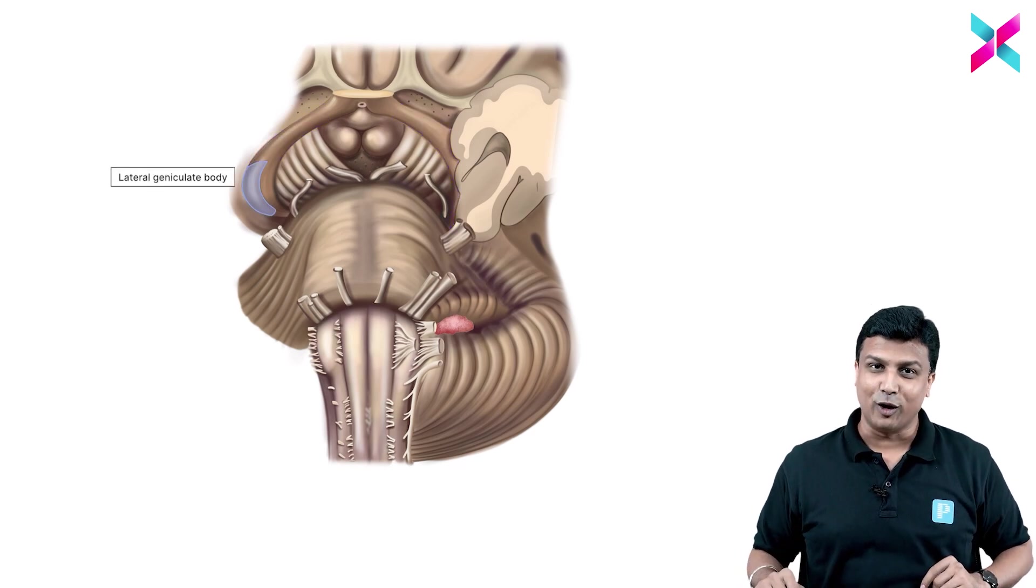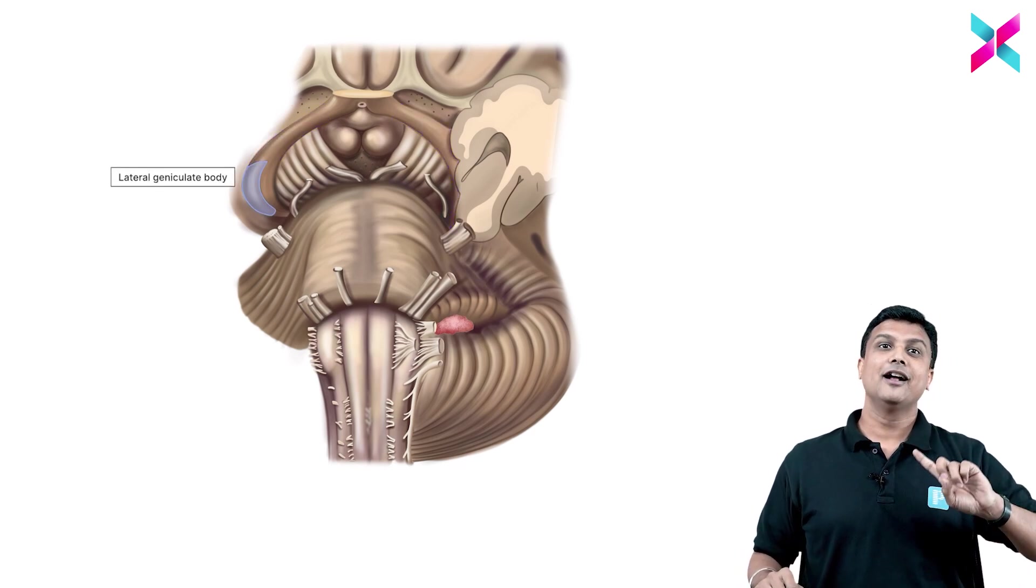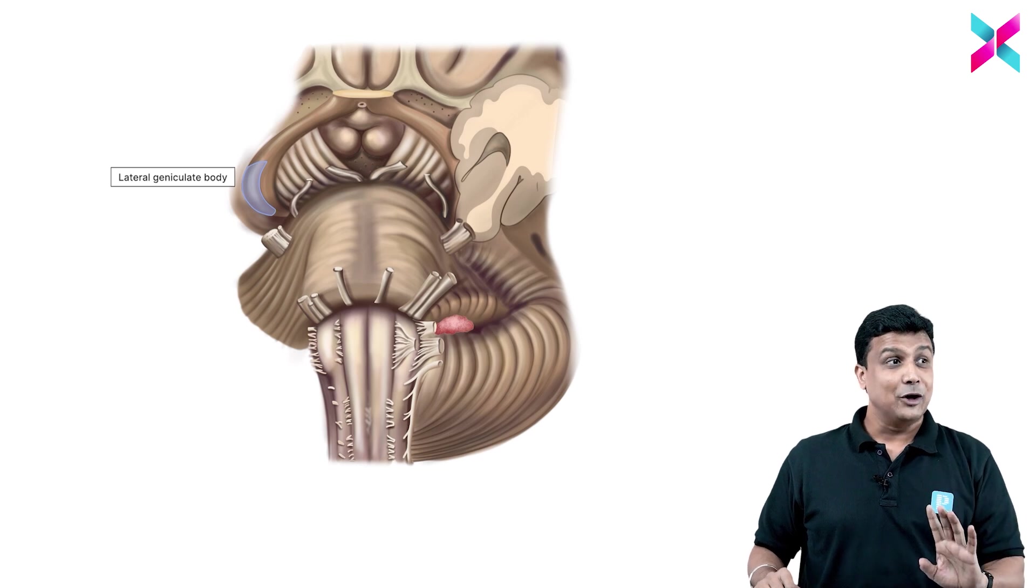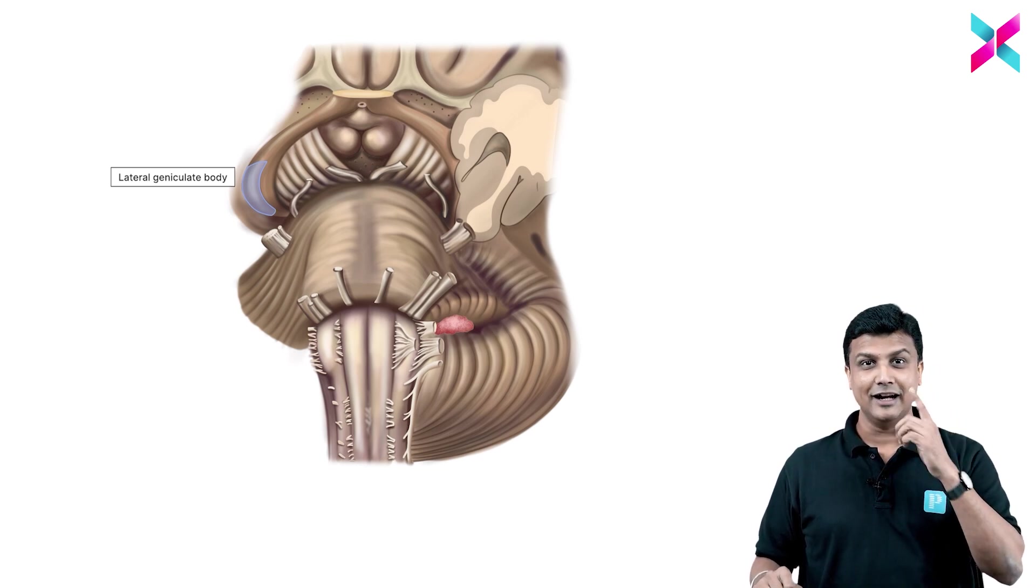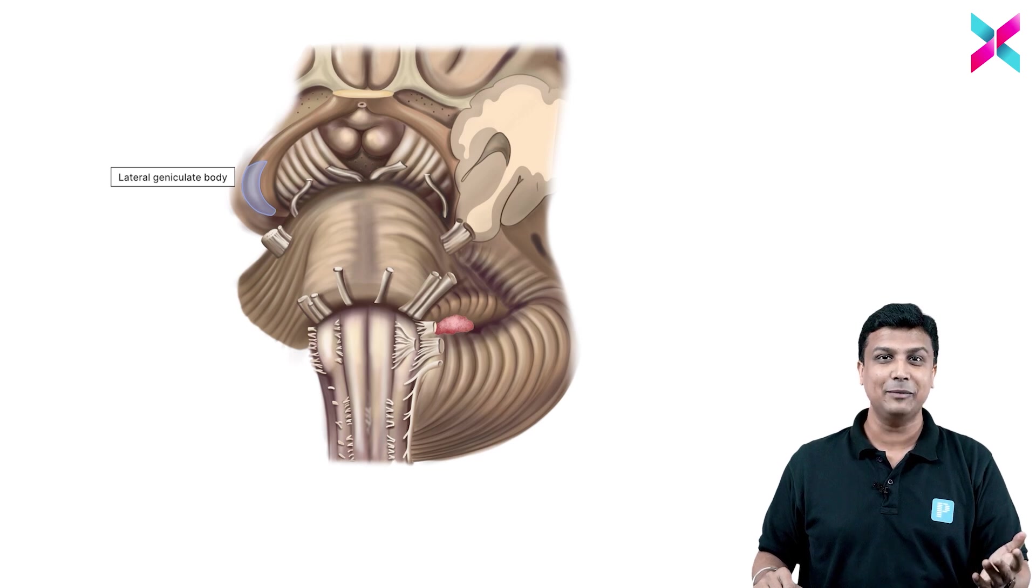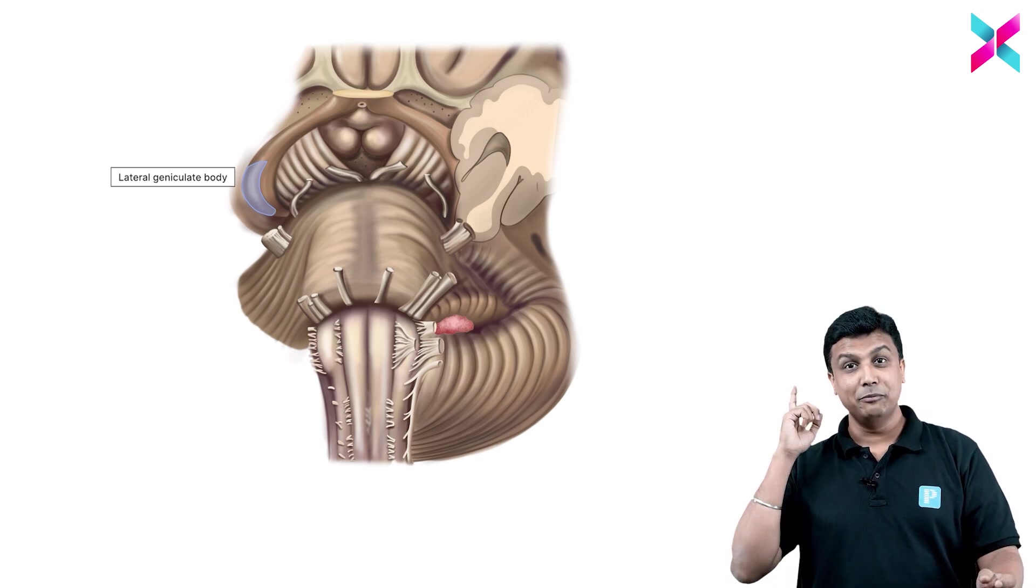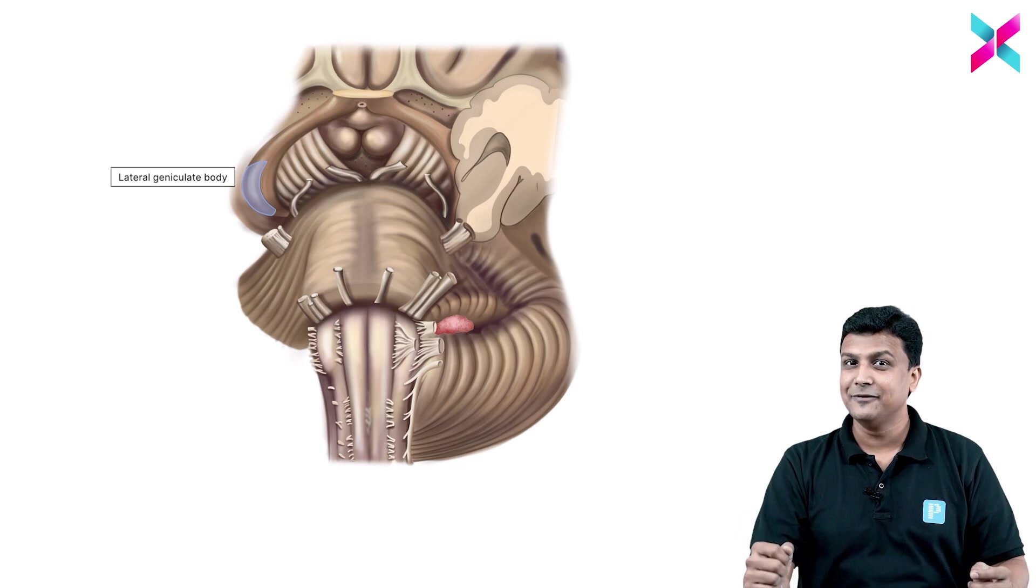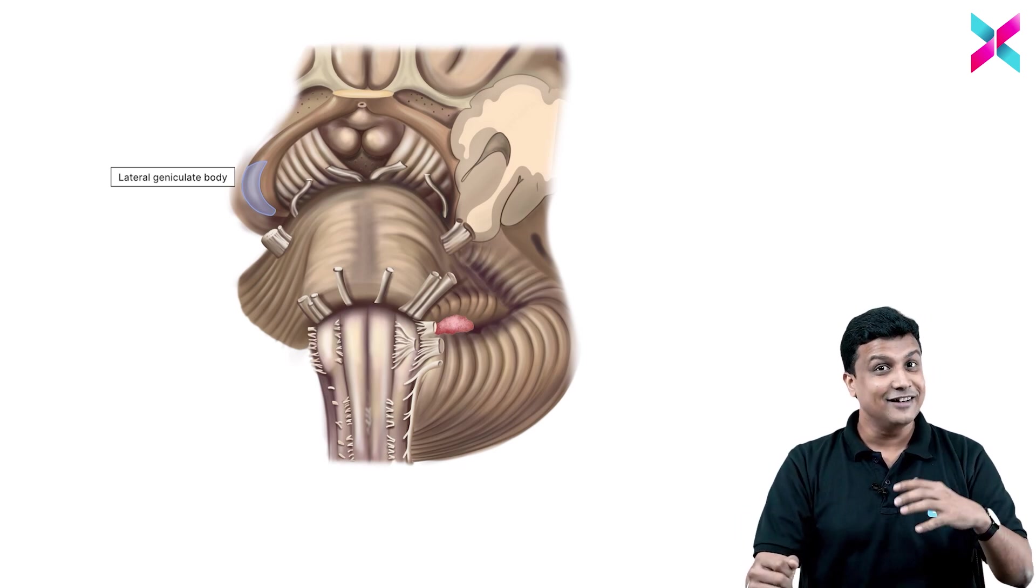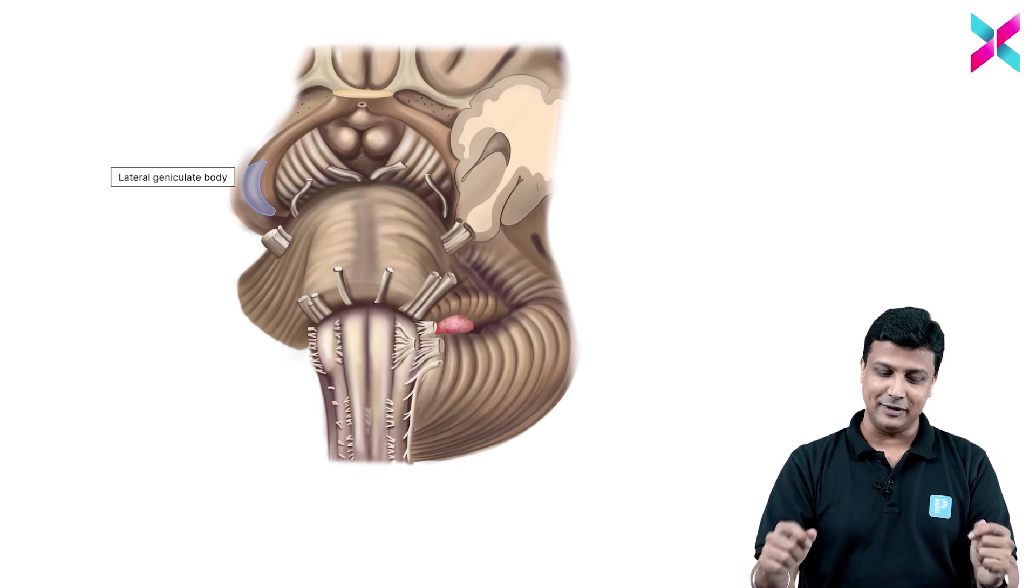And optic tract will continue behind into the lateral geniculate body. In visual pathway we'll be having lateral geniculate body. Don't get confused with the medial geniculate body. L for light, L for lateral geniculate body - this is how we remember. M for music, M for medial geniculate body. So medial geniculate body comes under auditory pathway whereas lateral geniculate body comes in visual pathway.